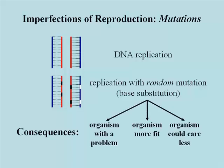There are three possible consequences for the next generation during such replication. A defective or non-viable individual or cell may form. Theoretically, an individual that is better suited to survive — that is in fact more fit — might ensue.